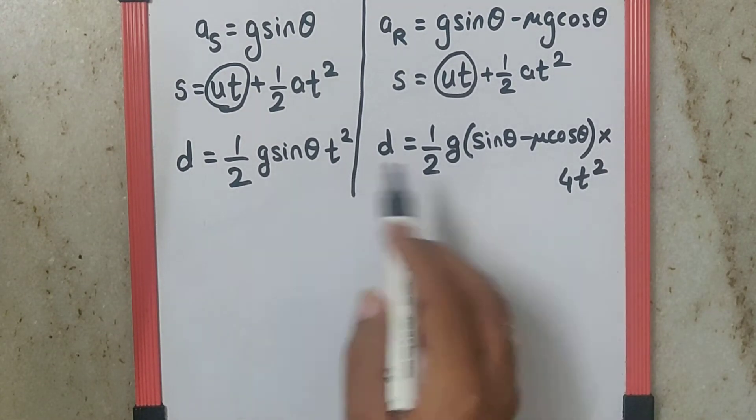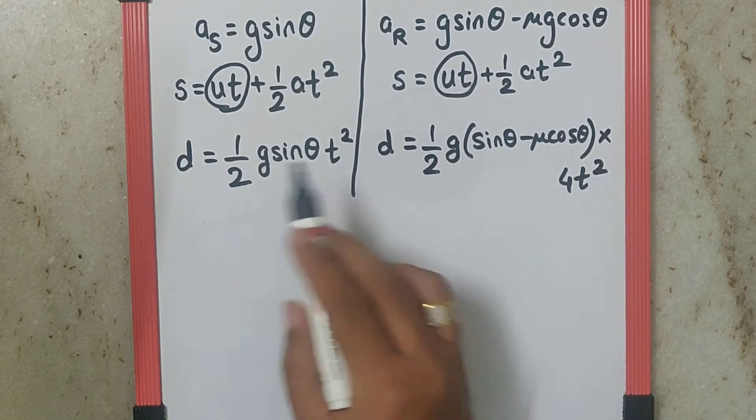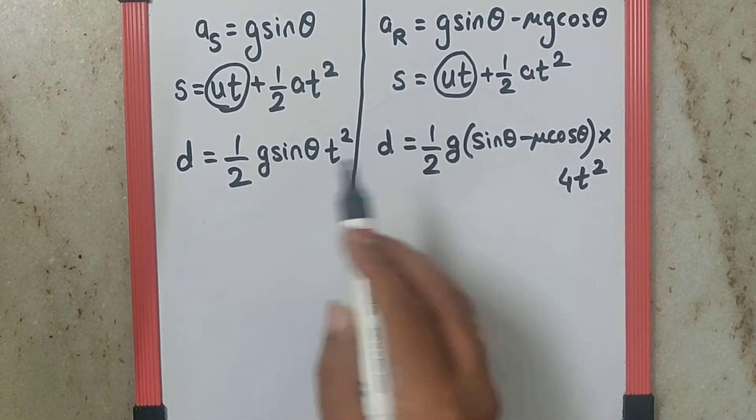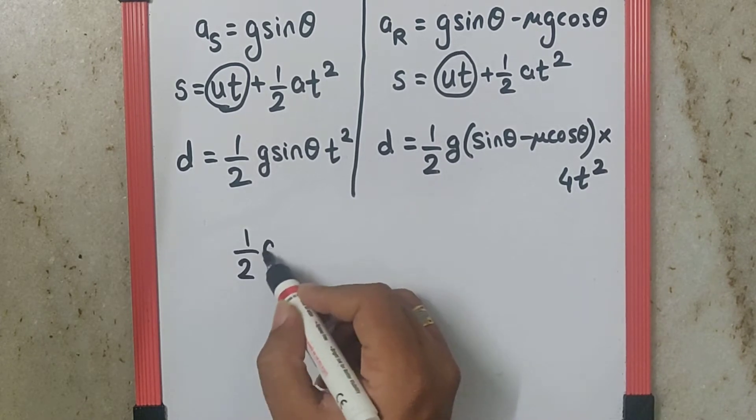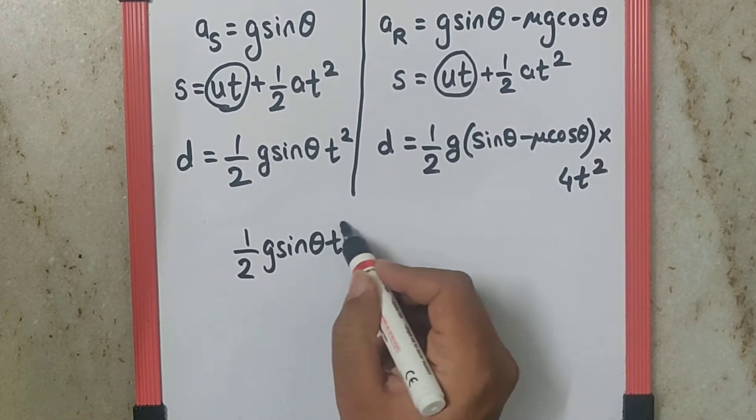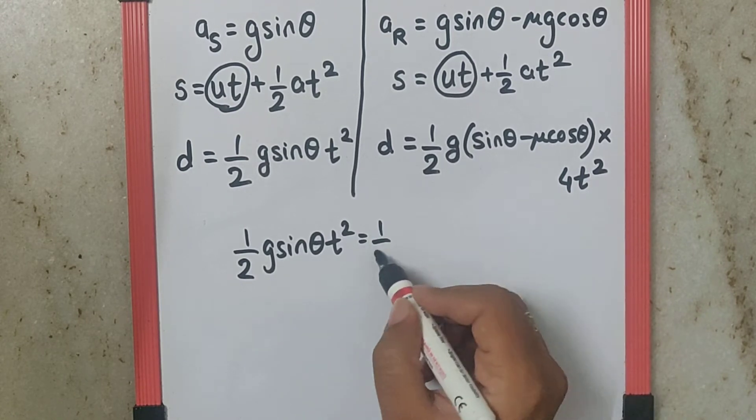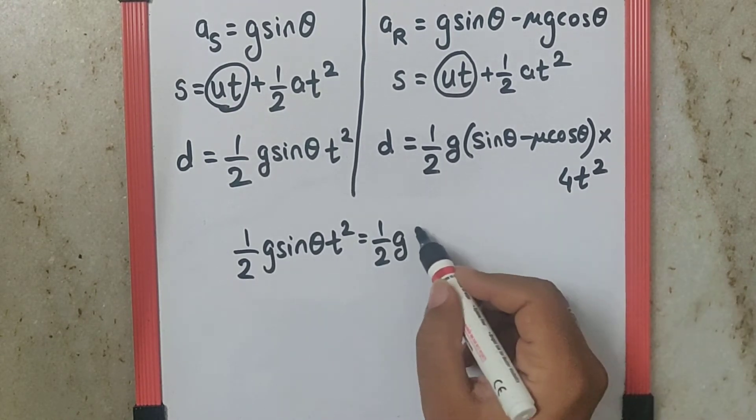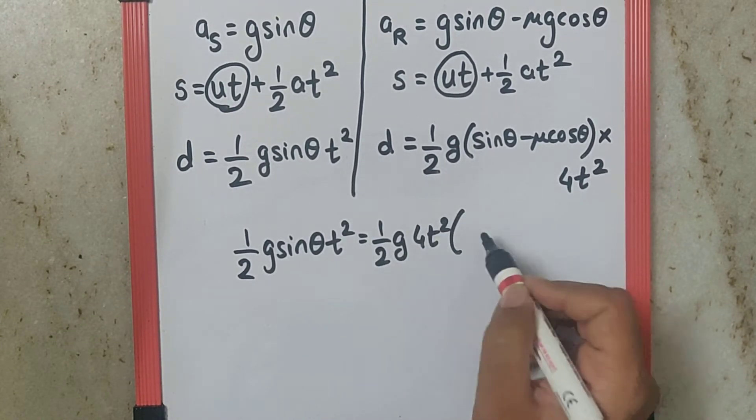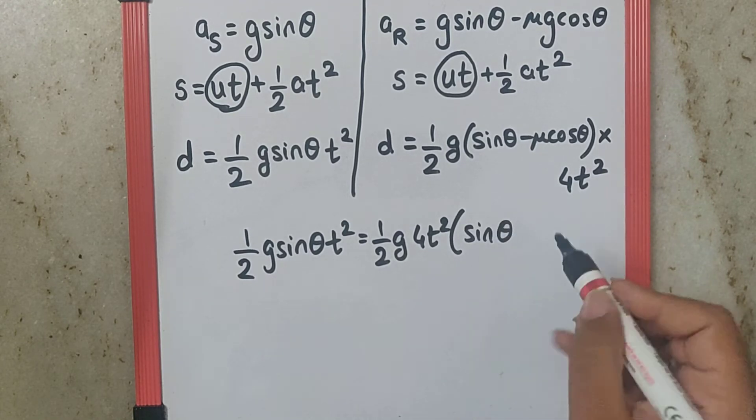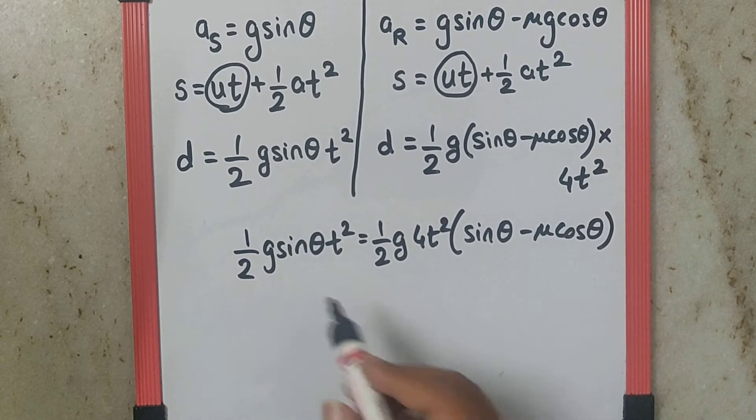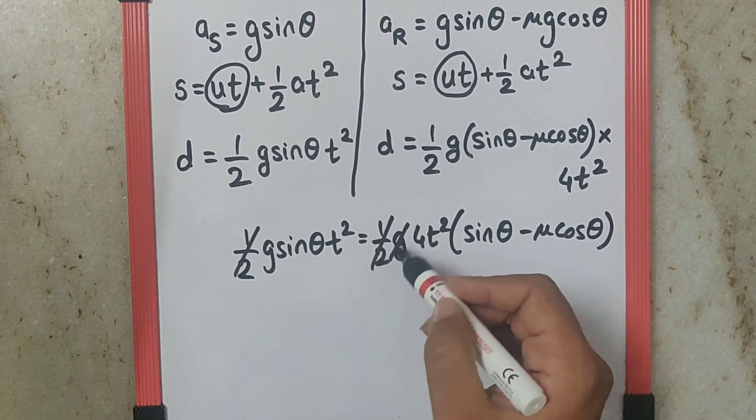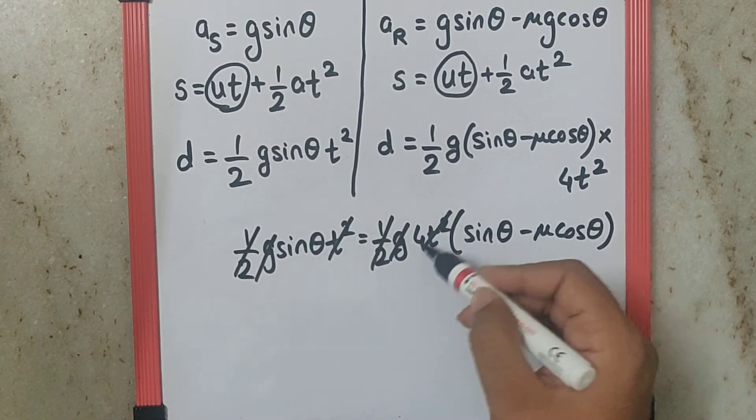Now we can say over here the left hand side is the same, that is the length of the plane, so we can equate the right hand side. Now if we equate that, we get half g sin theta t squared is equal to half g 4t squared bracket sin theta minus mu cos theta. Now this half and g and t squared can be cancelled throughout.